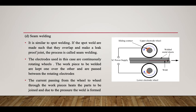Seam welding is essentially continuous spot welding. If spot welds are made such that they overlap and make a leak-proof joint, the process is called seam welding. The electrodes used are continuously rotating wheels. The workpieces are kept one over the other and passed between the rotating electrodes. Current passing from wheel to wheel through the workpiece heats the joint, and due to the pressure a continuous weld is formed.